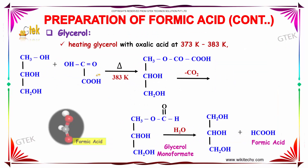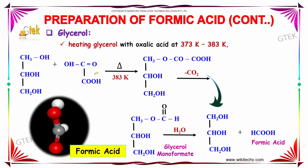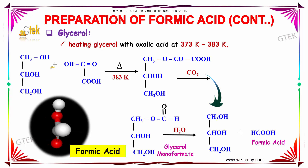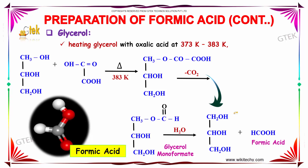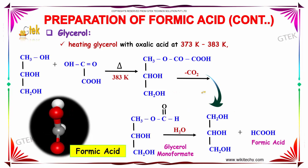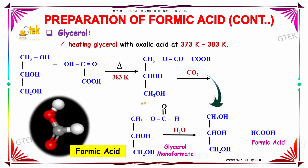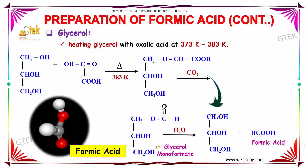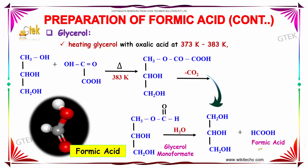On heating glycerol with oxalic acid at 373 to 383 Kelvin we obtain formic acid. First, in a several-step reaction, we obtain a large carboxylic acid, and when the CO₂ group is removed from this compound we obtain glycerol monoformate. On further hydrolysis we obtain glycerol along with formic acid.